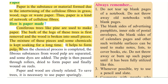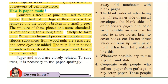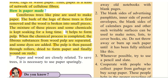Pulp means a mixture like a dough. When the chemical process is completed, the fibrous substances from the wood pulp are separated and some dyes — that is colour — are added. The pulp is then passed through rollers, dried to form paper, and finally wound on reels. So the dough-like pulp is pressed through rollers, dried into paper sheets, and wound on round reels.